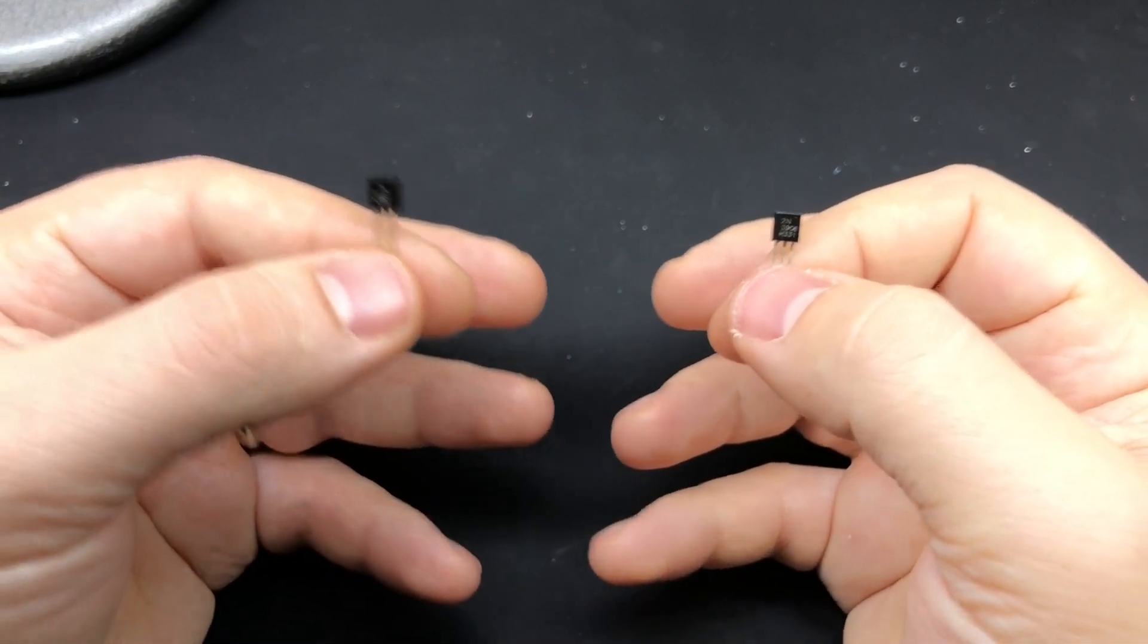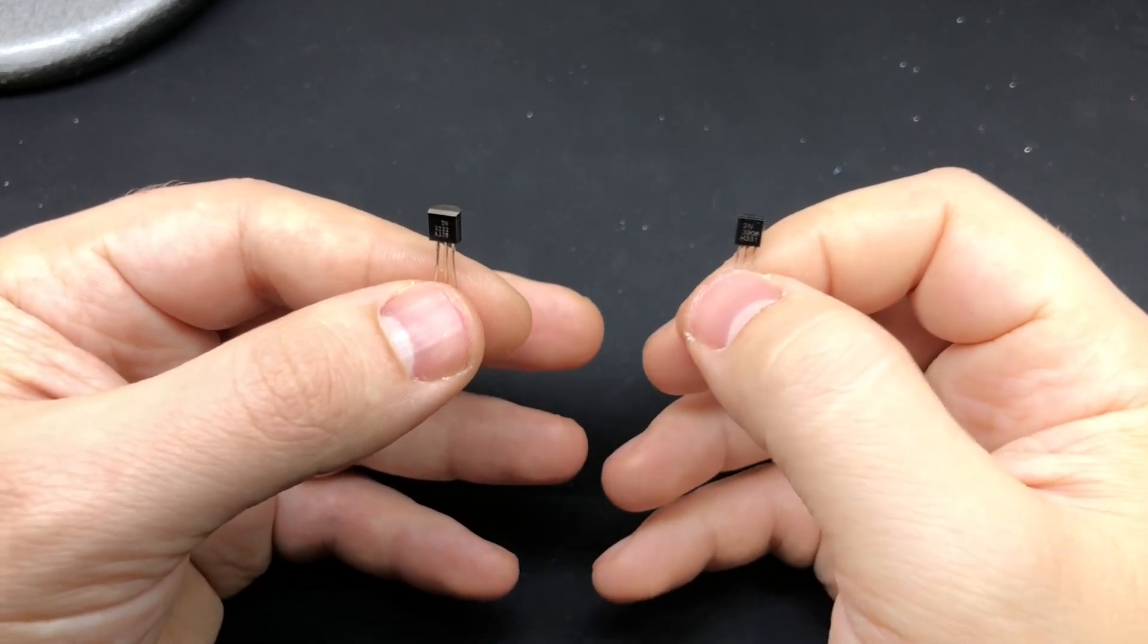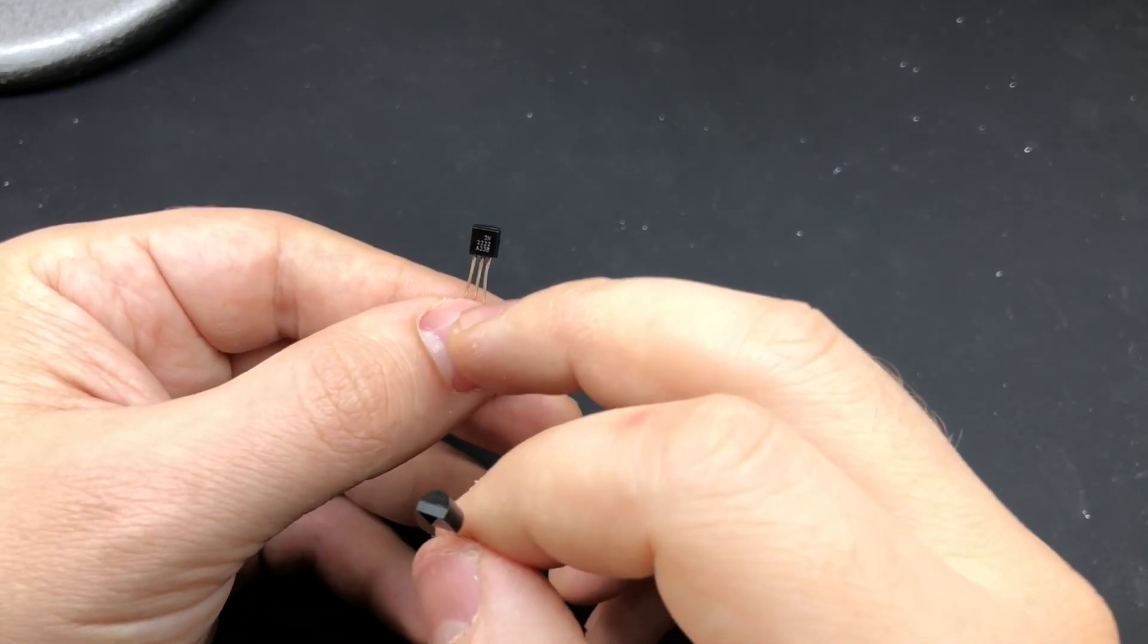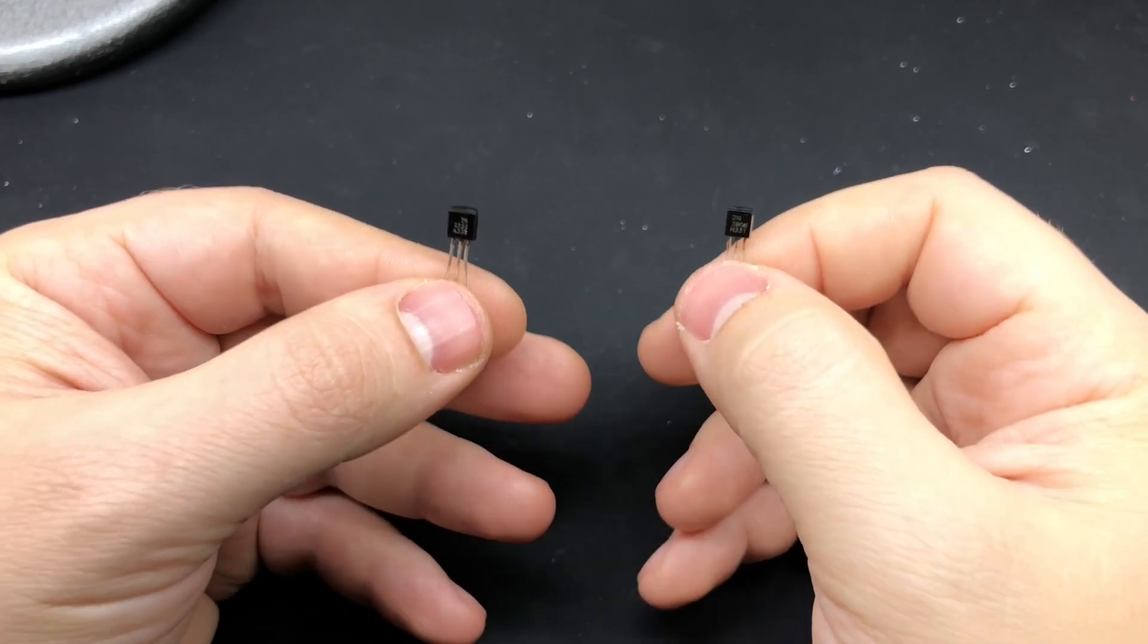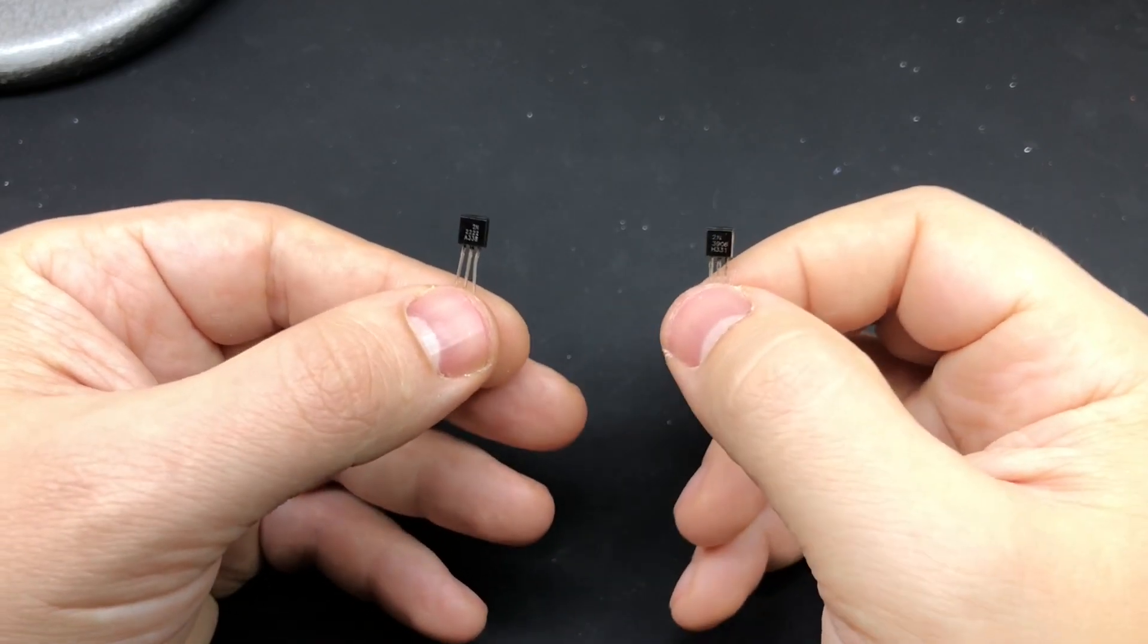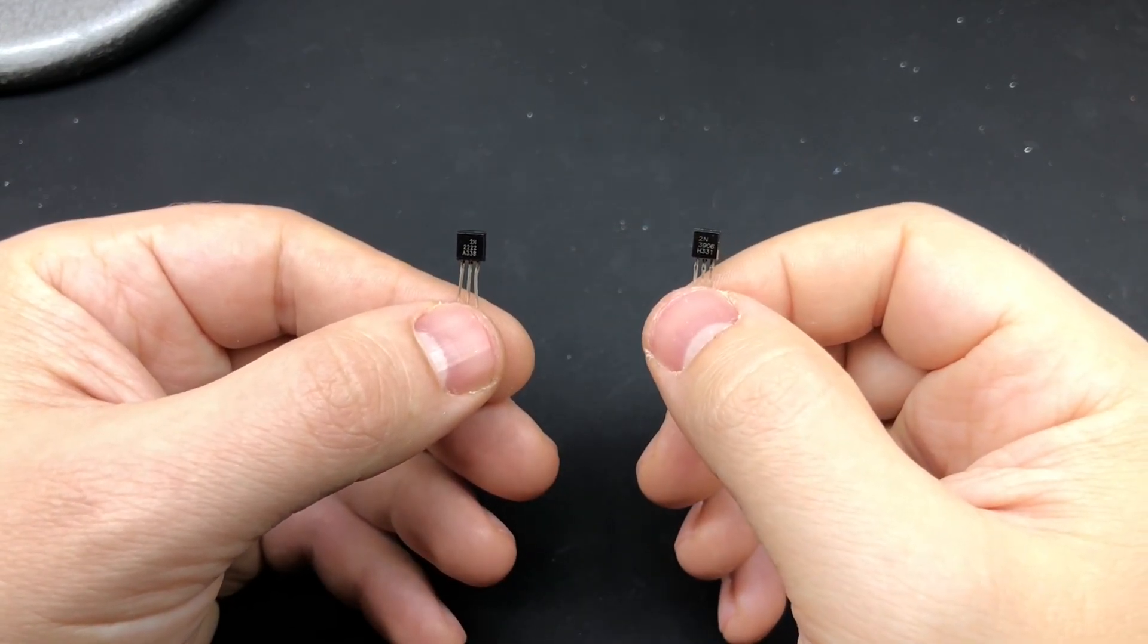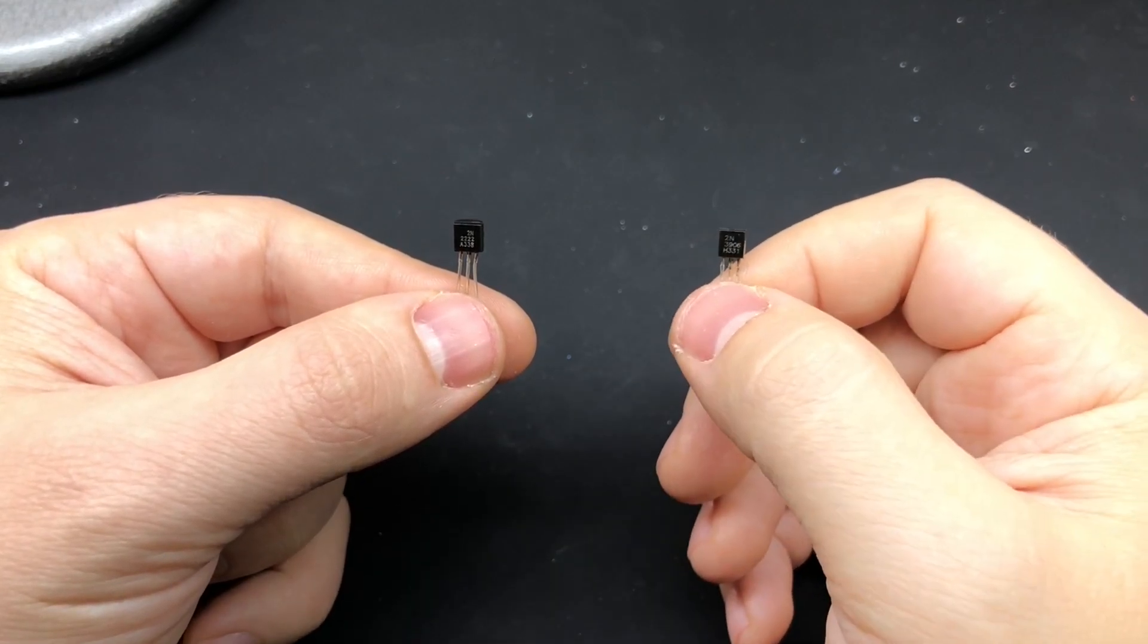A transistor is essentially a solid state switch, meaning that there's nothing mechanical about it. Each transistor has a collector, a base, and an emitter pin. On these particular ones the middle pin is the base pin. You connect the base pin to either ground or a positive voltage and that will control the flow of current going through the two outer pins. The order of the pins might be different depending on what transistors you use, but on this one the middle one is the base pin. This is an NPN transistor and this is a PNP transistor.